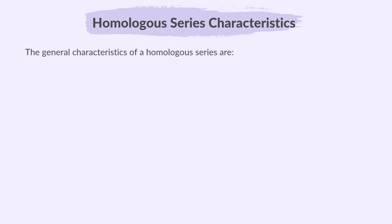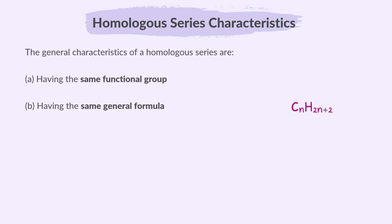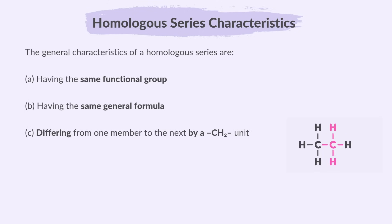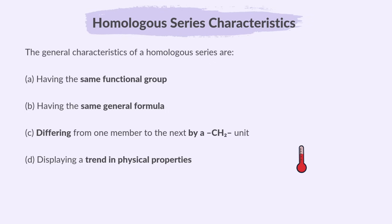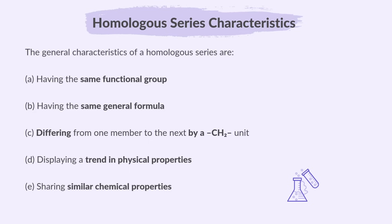The general characteristics of a homologous series are: having the same functional group — all compounds in the series contain the same functional group which determines their chemical properties; having the same general formula — each compound follows the same general formula such as CnH2n+2 for alkanes, differing from one member to the next by a CH2 unit; displaying a trend in physical properties — boiling point or melting point show a gradual change as you move through the series; and sharing similar chemical properties — all compounds react in similar ways due to their shared functional group.